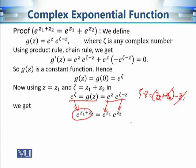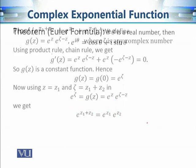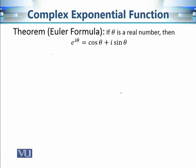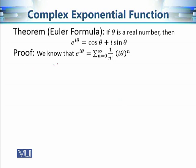Now let's prove Euler's formula. The starting point is the definition of e^(iθ): substituting z = iθ into e^z = Σ (1/n!) zⁿ gives e^(iθ) = Σ (1/n!) (iθ)ⁿ. To show this equals cosθ + i·sinθ, we separate the even and odd terms.